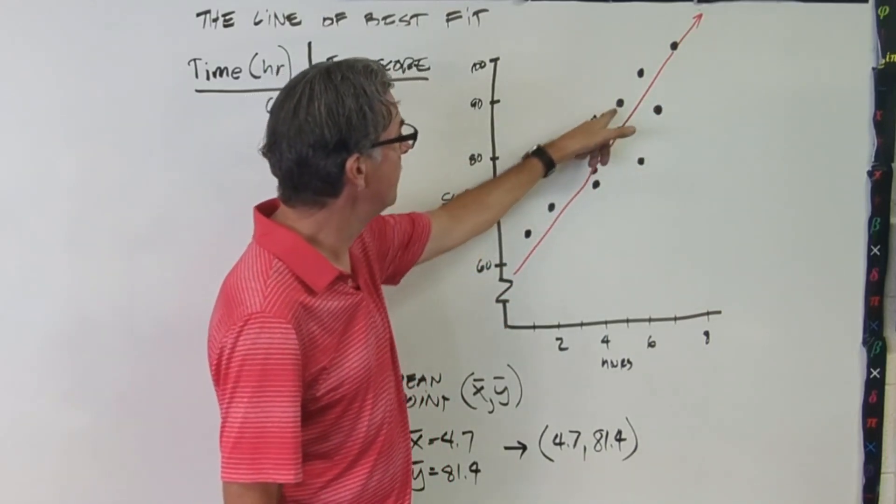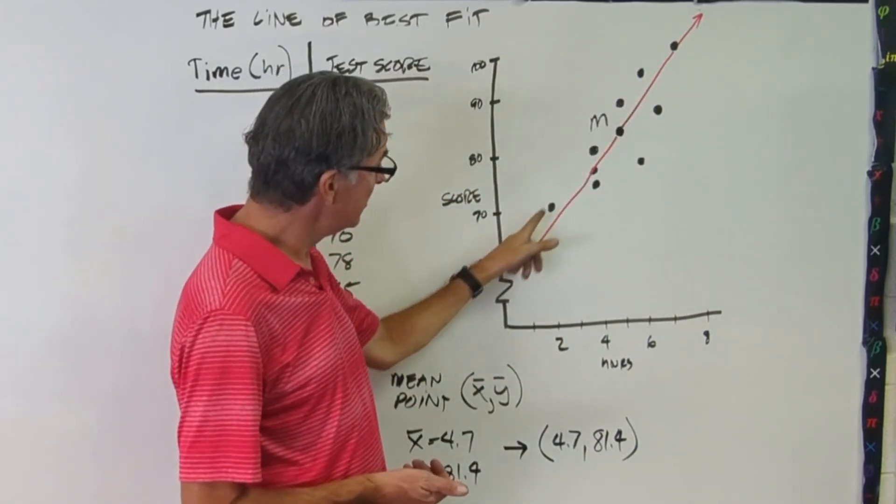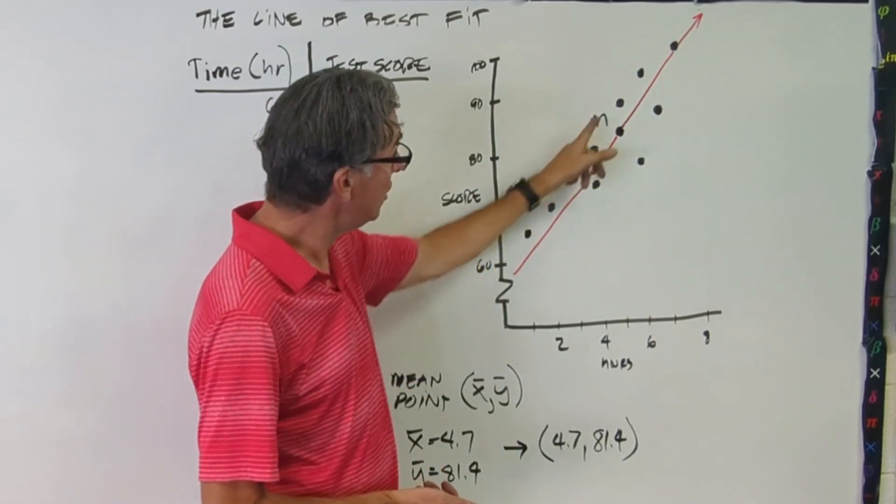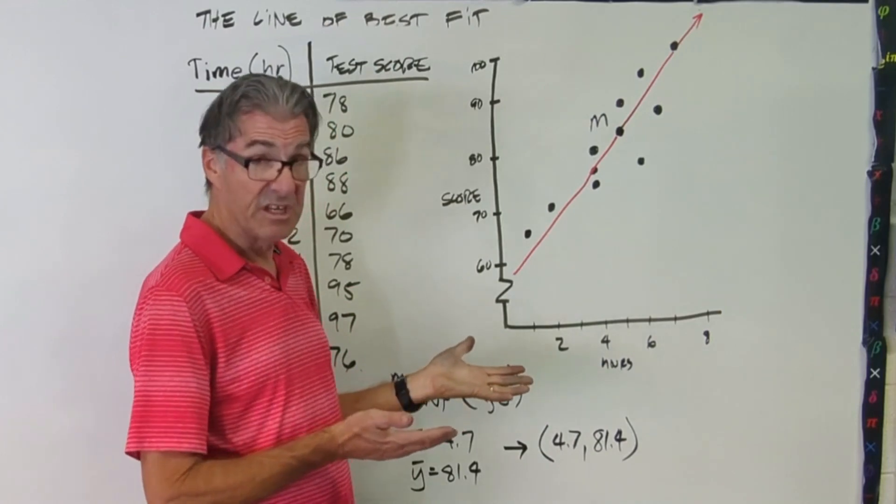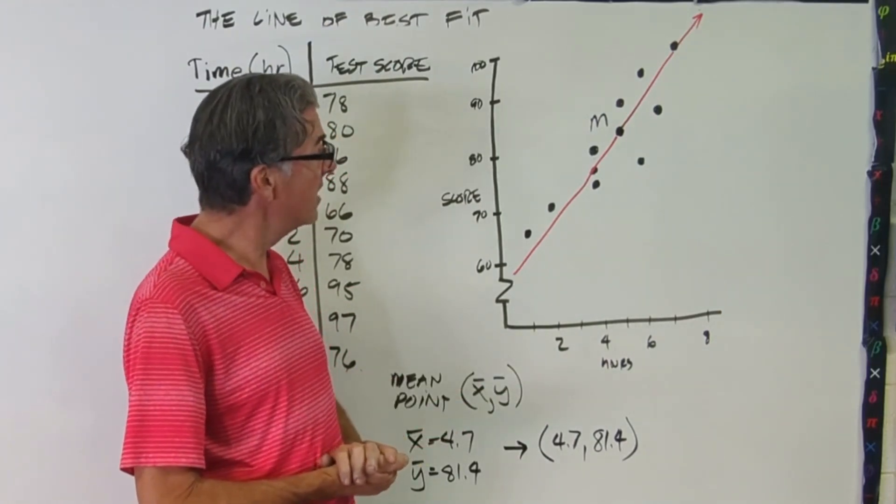And you'll notice that there's really only three points that are below. We've got four, five that are above, but the above points are quite a bit closer than the ones that are below. So I've kind of split the difference between the data points. I'm about halfway between all of it.